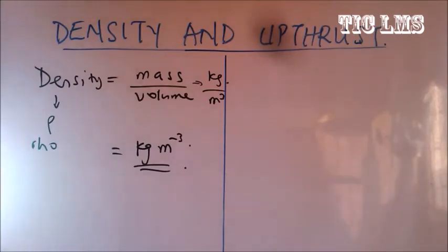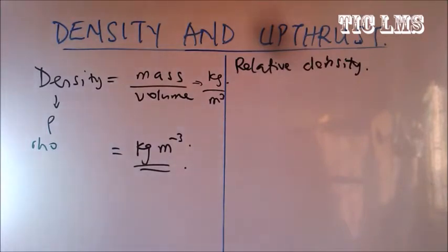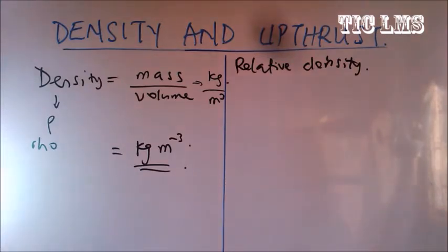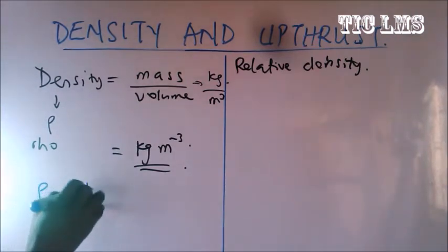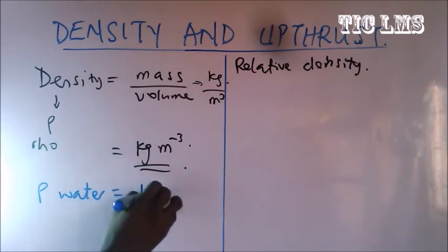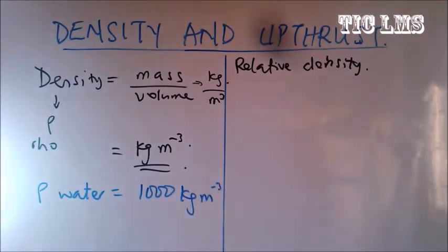Now look at relative density. When we talk about relative density, you are comparing the density of a body with the density of water. Generally, the density of water is 1000 kilograms per meter cubed. So we are comparing the density of a substance to a known density.